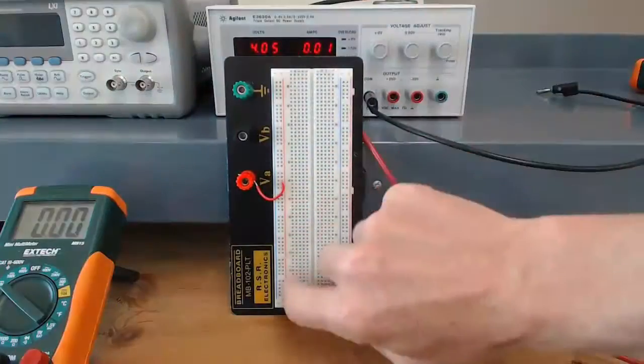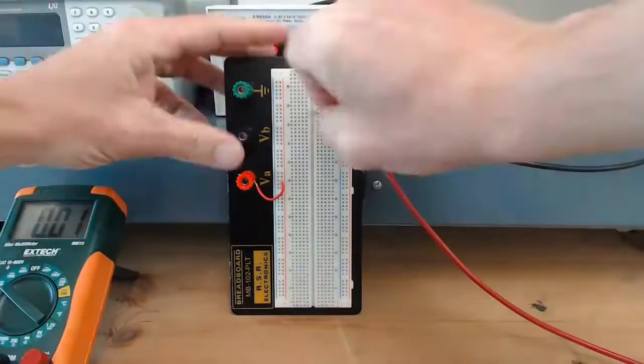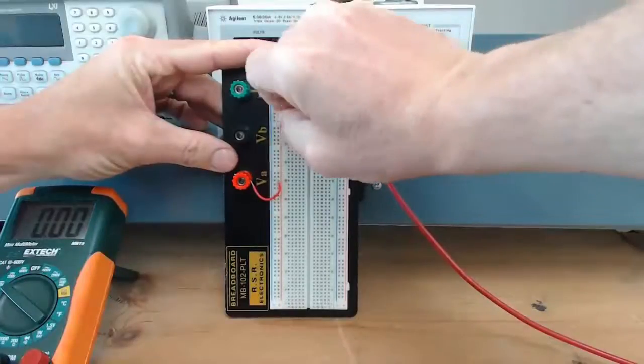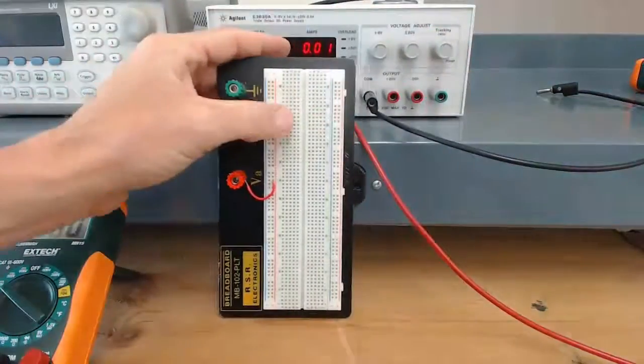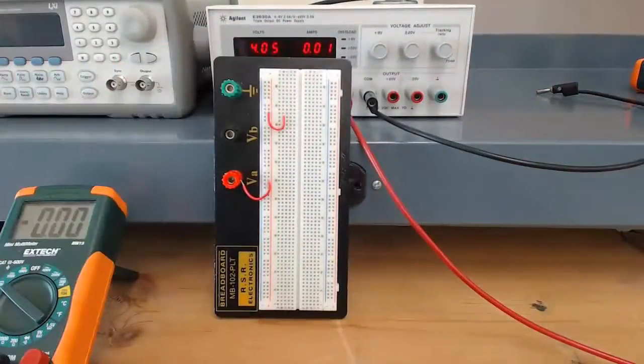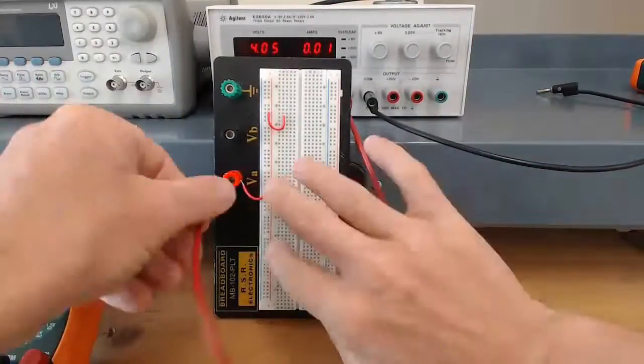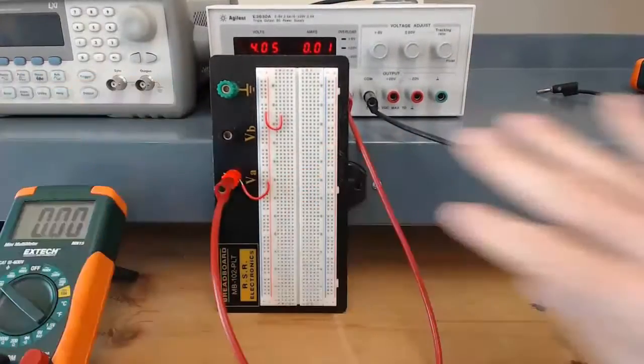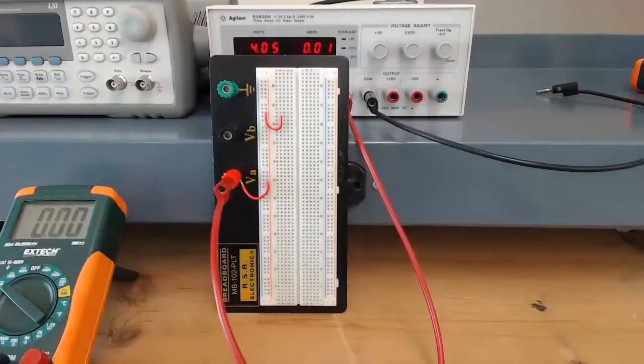If we want to bring power into a particular point in the circuit area of the breadboard, all we have to do is use a jumper wire from the power strip to any node we want. Once we have connected the banana connector to the power supply, everything connected to the red wires is connected to the power supply.